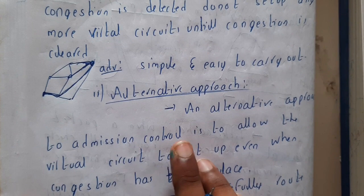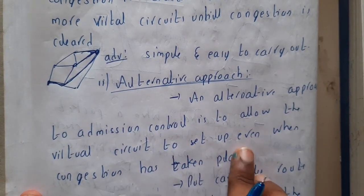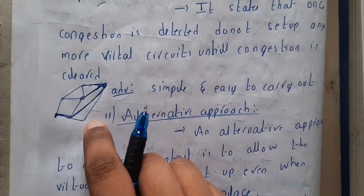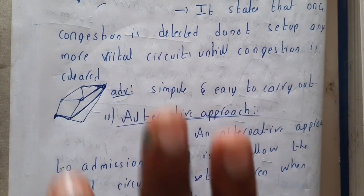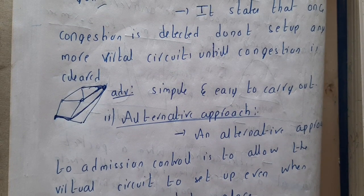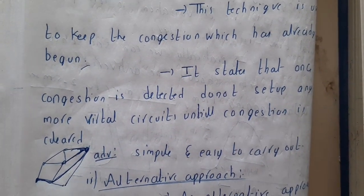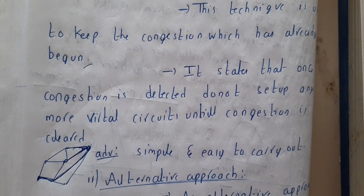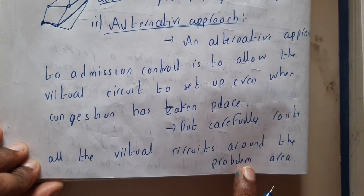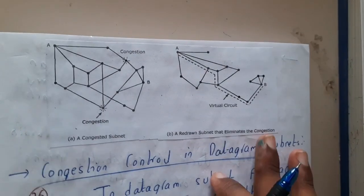An alternative approach to admission control is to allow virtual circuits to be set up even when congestion has taken place. But instead of routing through the congested area, you should carefully route all the virtual circuits around the problem area — not through it, but around it.